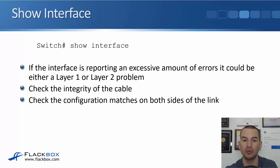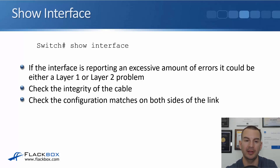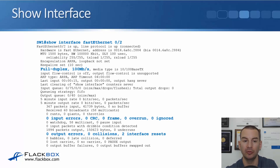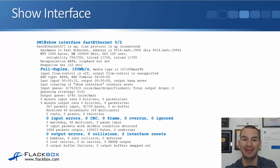The next command is show interface. If the interface is reporting an excessive amount of errors, it could be either a layer 1 or layer 2 problem — check the integrity of the cable and that your administrative configuration matches on both sides of the link. If you do just show interface and hit enter, you'll get a really long output for every interface, so usually specify the interface, like FastEthernet 0/2. Here we can see it's set to full duplex and 100 megabits per second, with no input or output errors.